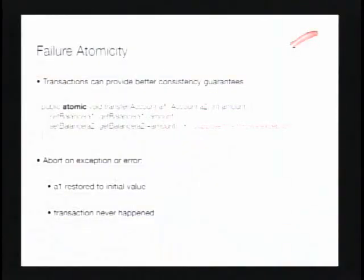There are a few different semantics you might consider for failure atomicity, and it's actually a topic of hot debate. Some people think you should never have failure-on-exception semantics and should just commit. Throwing the exception and cascading it out is interesting because if the transaction never occurred, where did the exception object come from? There is some interesting work trying to come up with reasonable semantics that expose the exception but still roll back the values.